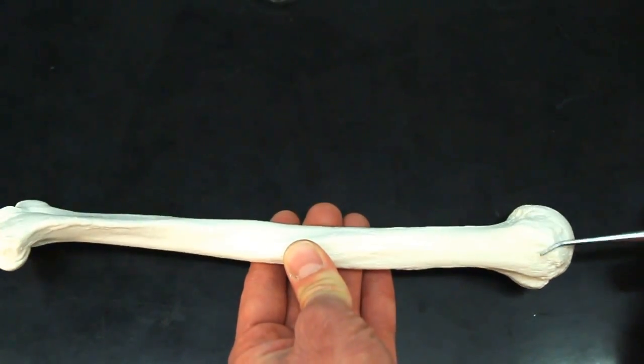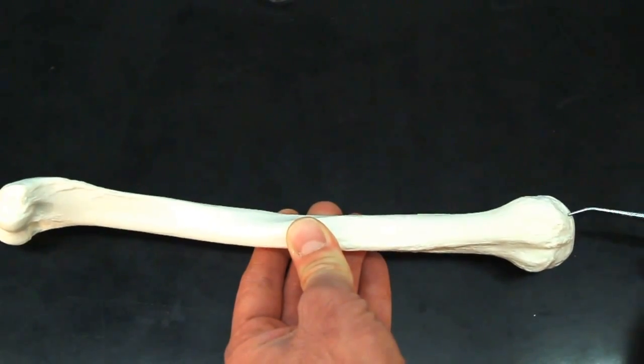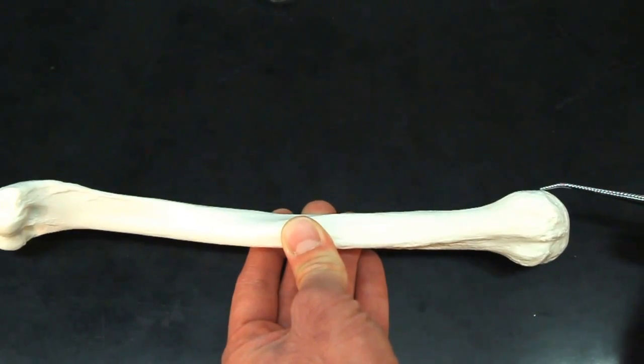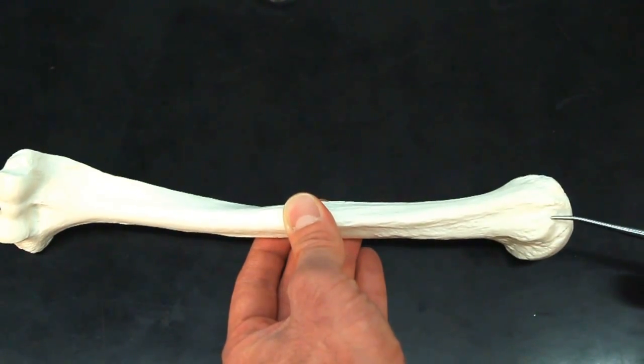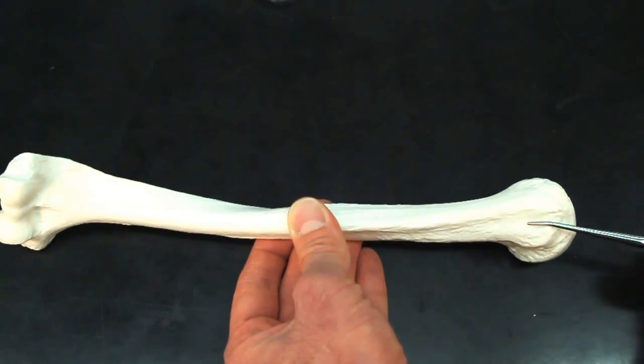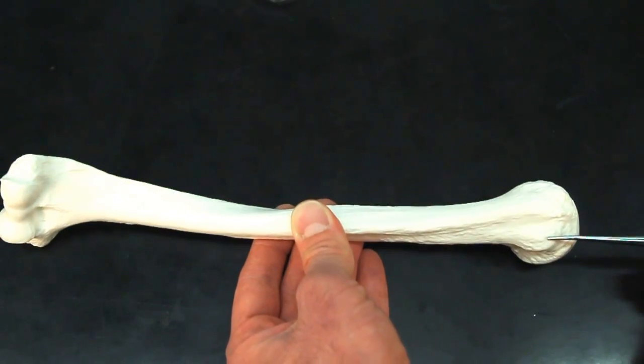The much larger protrusion is known as the greater tubercle. So this is the greater tubercle. While this smaller protrusion, that is known as the lesser tubercle. So larger, greater tubercle, smaller, lesser tubercle.